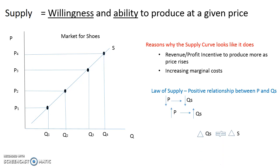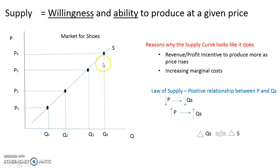What's really important to remember is that quantity supplied — how much shoes are supplied — is determined by price. Quantity supplied is dependent on price. Therefore, a change in quantity supplied, which is simply a movement along the supply curve, is not the same thing as a change in supply.